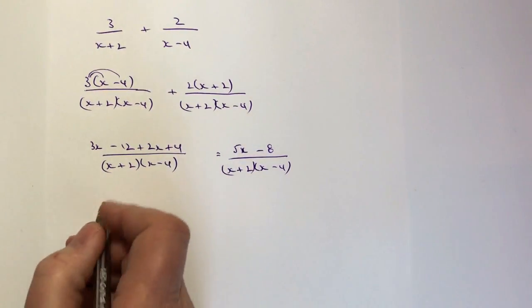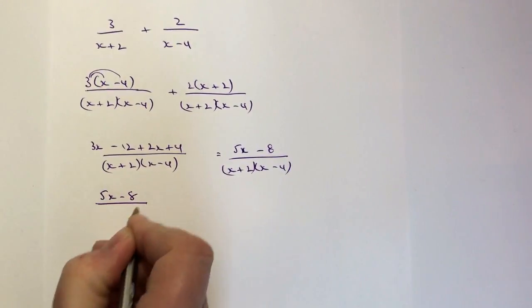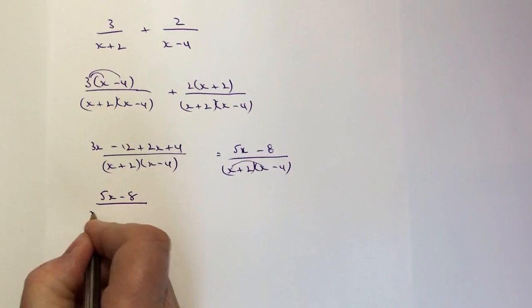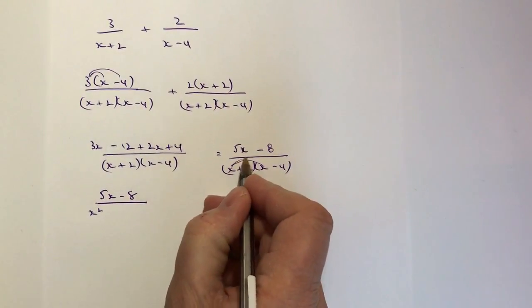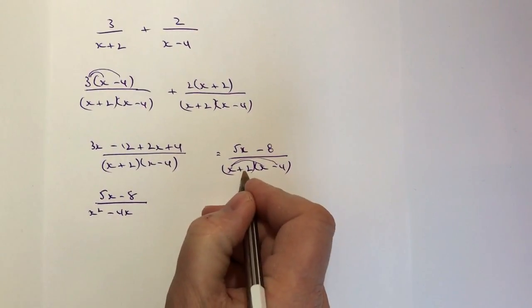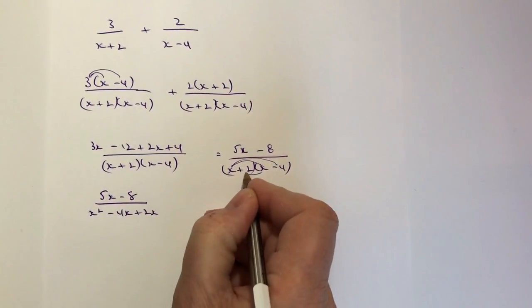So what I'm going to do is write the top as 5x-8, and the bottom I'm going to multiply out. So x times x is x², and then x times -4 is -4x, plus 2 times x is plus 2x, and then plus 2 times -4 is -8.